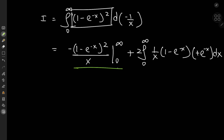Now to evaluate the first term in the limits as x approaches infinity and 0: as x approaches infinity, e to the negative x approaches 0. So we have a (1 minus 0) divided by something approaching infinity structure, which evaluates to 0.